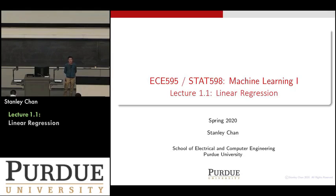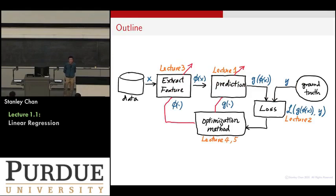This is a rough outline of the five lectures that we are going to go through in the first part of the course. In these five lectures, we will study linear regression — a very simple method that can go through all these four blocks in the diagram that I am showing here.